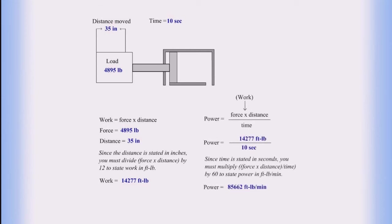Power equals force times distance divided by time. So the power equals 14,277 foot-pounds divided by 10 seconds. And since the time is stated in seconds, you must multiply by 60 to state power in foot-pounds per minute. So power equals 85,662 foot-pounds per minute.